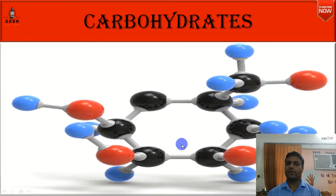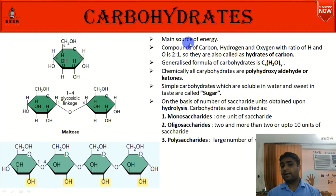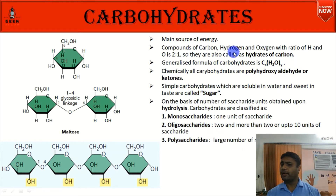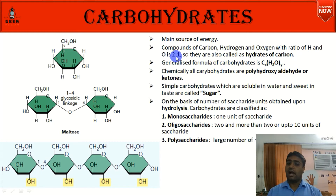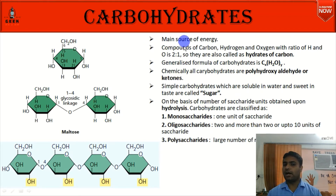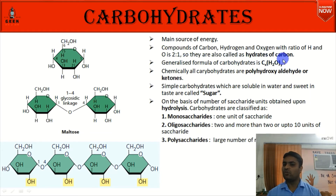In this lecture we are going to study about carbohydrates. Carbohydrate is the main source of energy, and basically it is a compound of carbon, hydrogen, and oxygen, with a ratio of hydrogen to oxygen of 2:1. They are called hydrates of carbon because of this ratio.